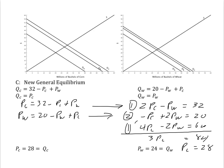So QC is equal to 28. And in the demand curve I get 28 is equal to 32 minus 28 plus PW. Or PW is equal to 28 minus 4 equals 24. And that's also the output in the wheat market.